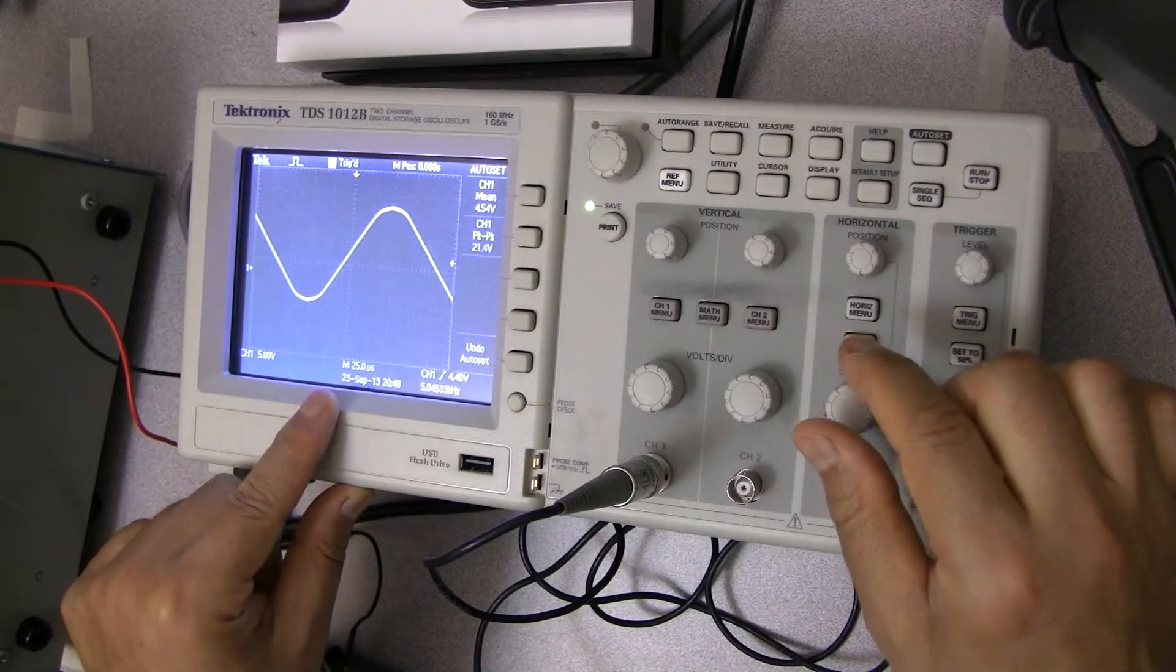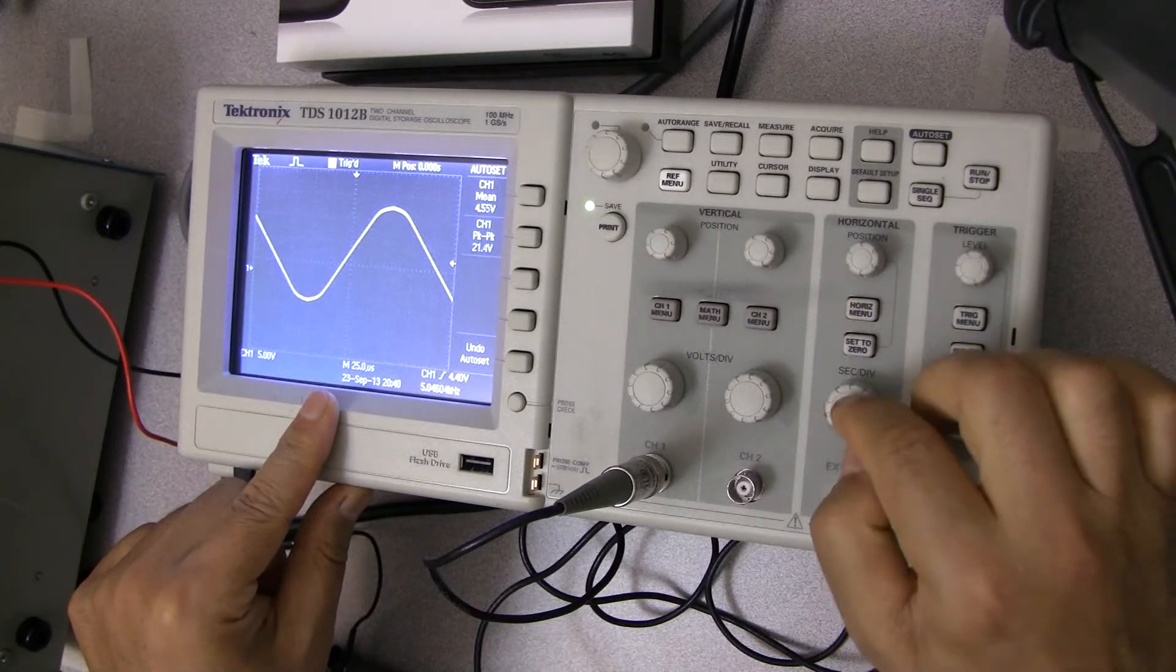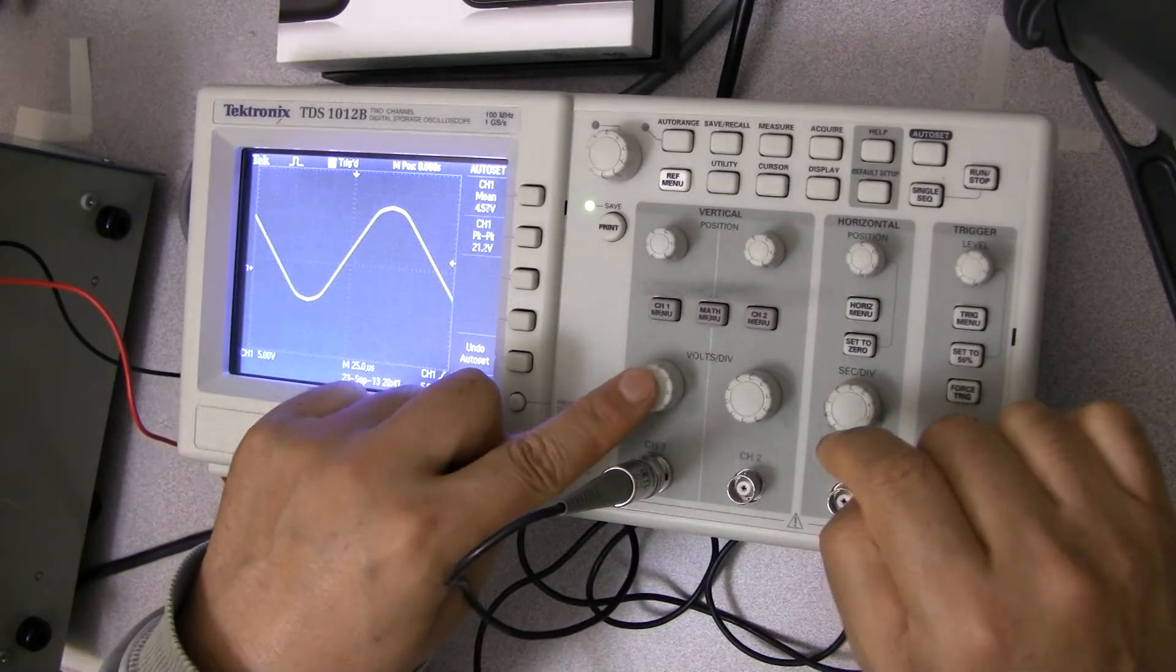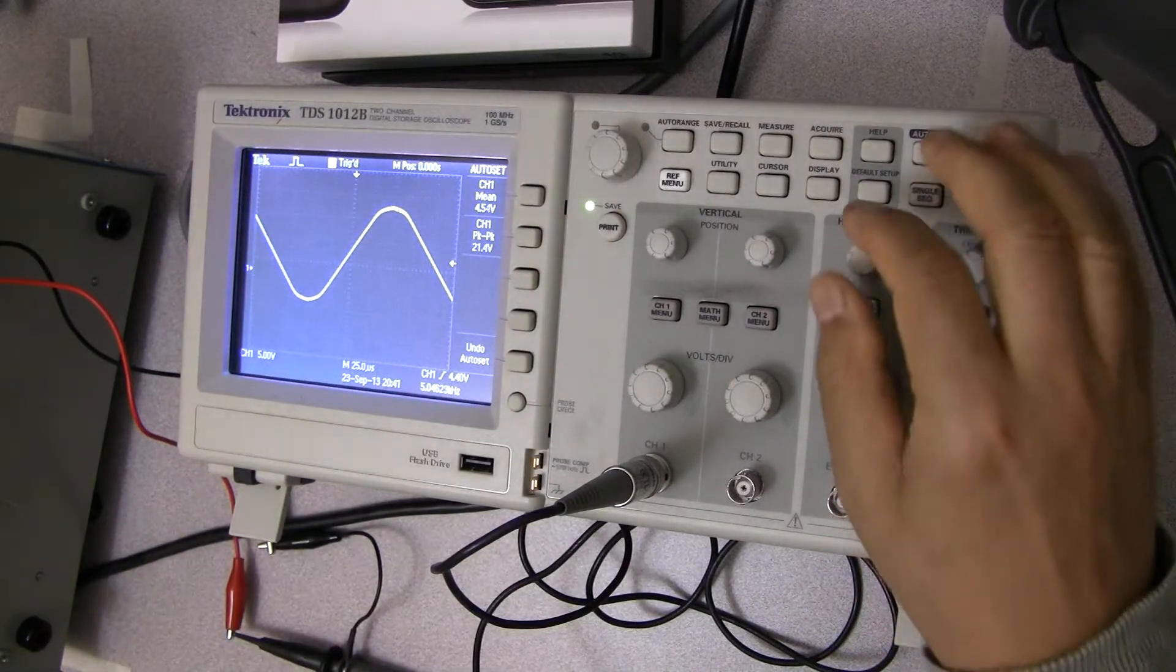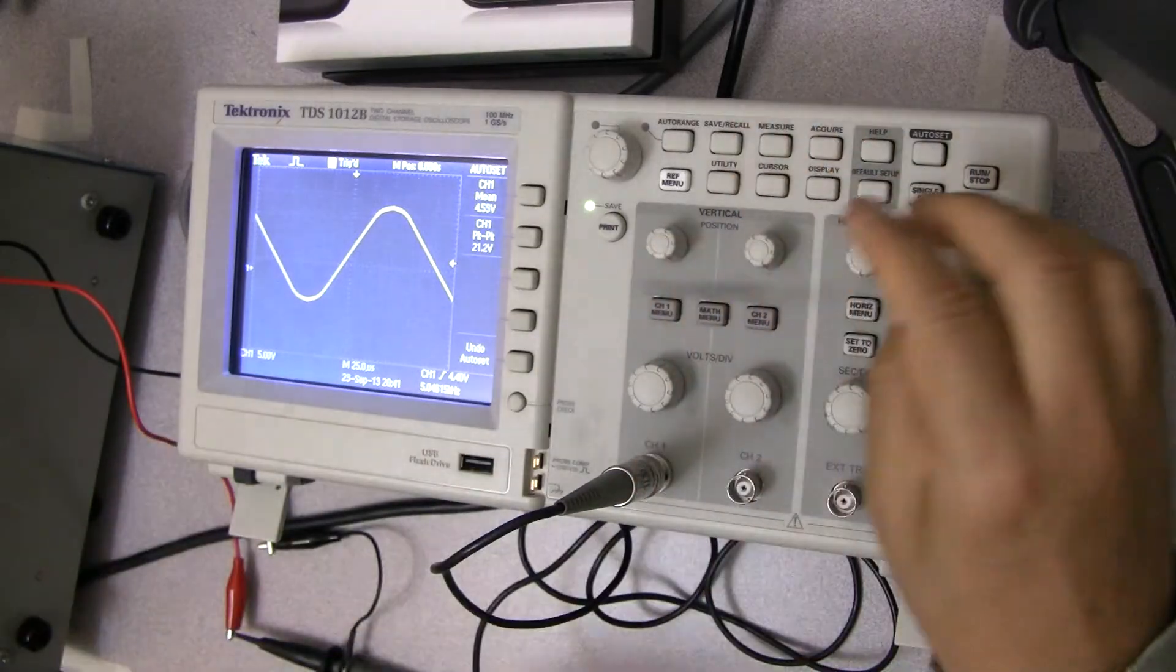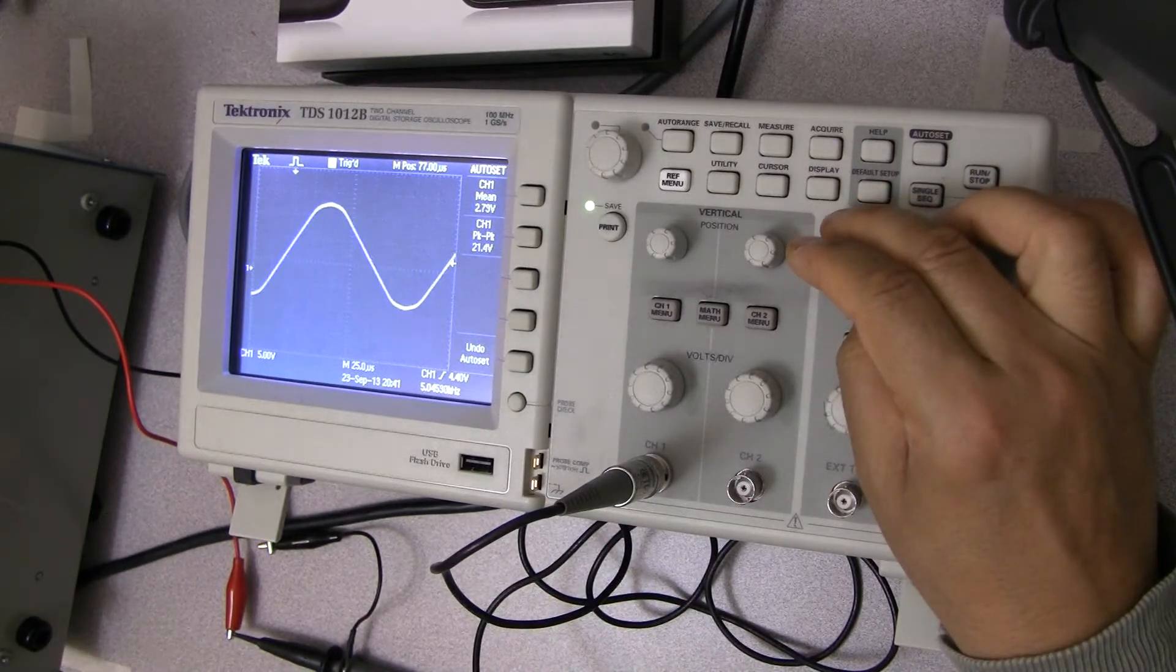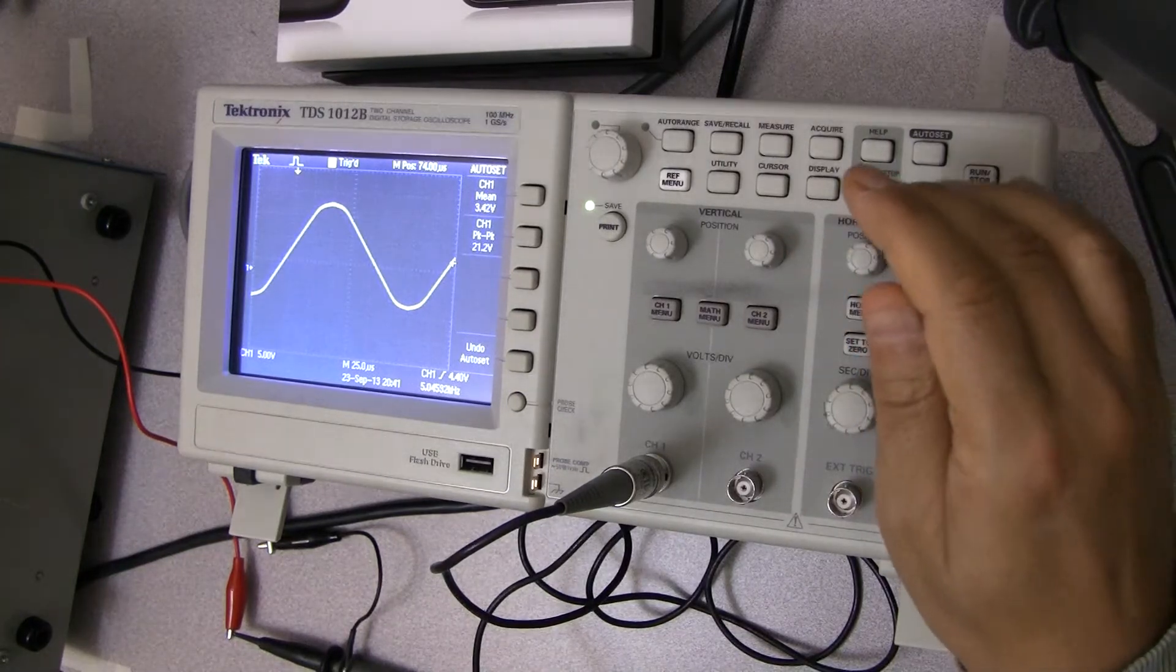So this button, by turning it, allows you to increase or decrease the size of each horizontal division. This one allowed you to do the vertical, the voltage. This allows the horizontal or time. The same way as the vertical knob here allowed you to move it up and down, this one allows you to move it left and right. Sometimes I want to know at the minimum so I can see it—different reasons. Whatever your reason is, you can do any of that stuff.